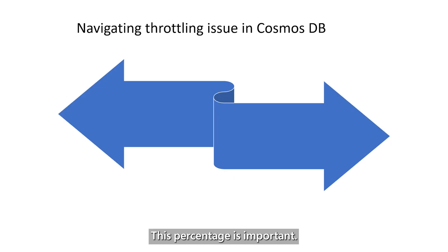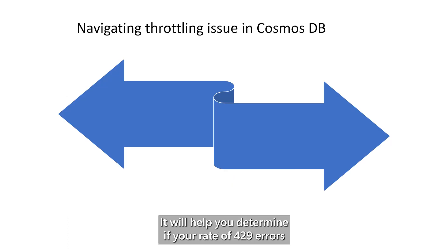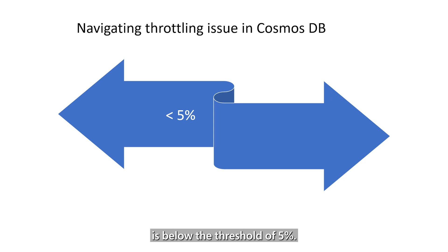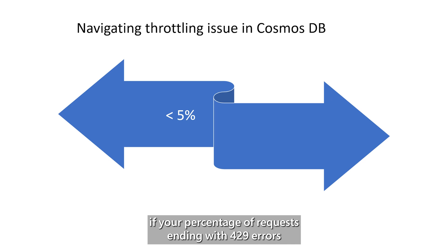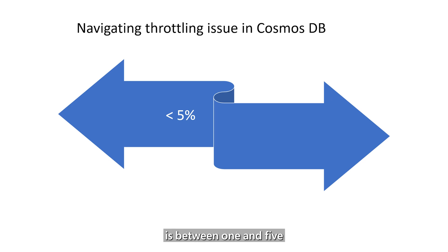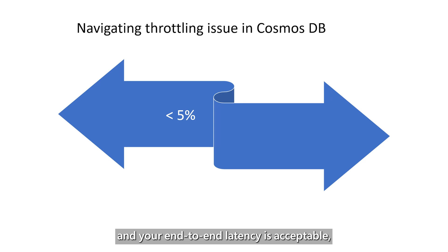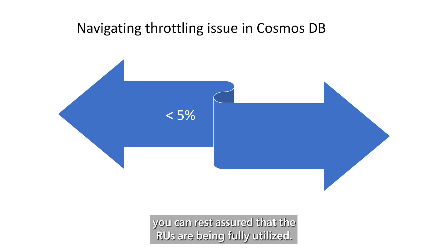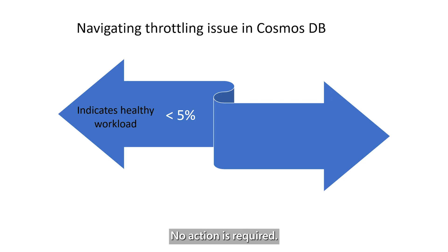This percentage is important. It will help you determine if your rate of 429 errors is below the threshold of 5%. In general, for a production workload, if your percentage of requests ending with 429 errors is between 1 and 5, and your end-to-end latency is acceptable, you can rest assured that the RUs are being fully utilized. No action is required.